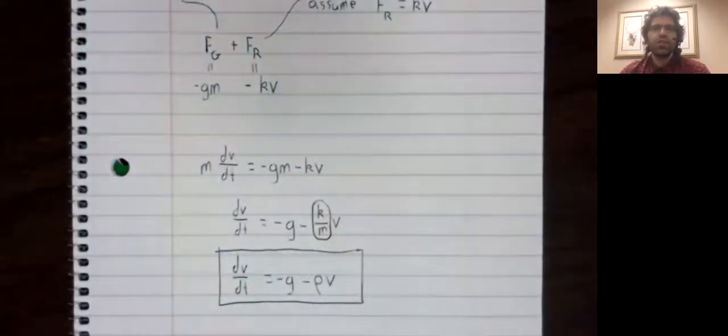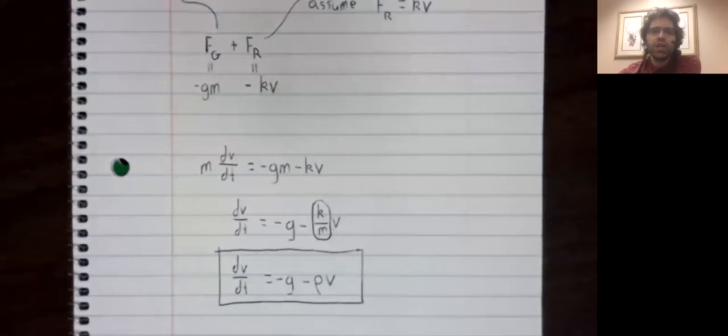There's the differential equation and we can analyze it a few different ways. This differential equation is autonomous, so we can look at fixed points. It's also separable, so we can solve it. Over the course of this unit, we will do both of those things.